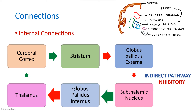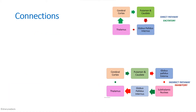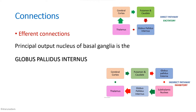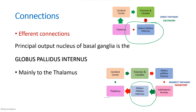So that is about the direct and the indirect pathway. From this we can guess the efferent connections. The main efferent connection is from the globus pallidus internus both in the direct as well as the indirect pathway — the globus pallidus internus is the principal output nucleus in both pathways. Mainly it projects to the thalamus. In both direct and indirect pathway, there is a loop from the cortex to the striatum, then to the thalamus, and back to the cortex. Such a loop is called the motor loop. The efferent connections are mainly from the globus pallidus internus to the thalamus, forming part of the motor loop.